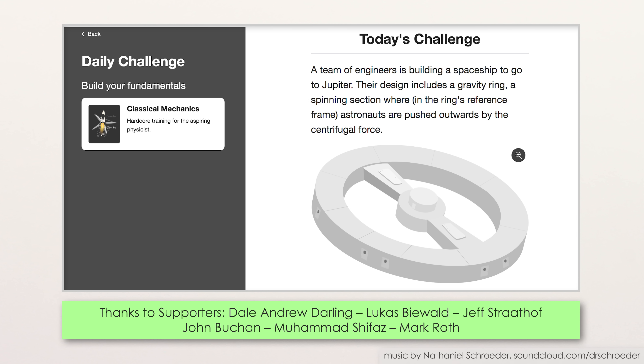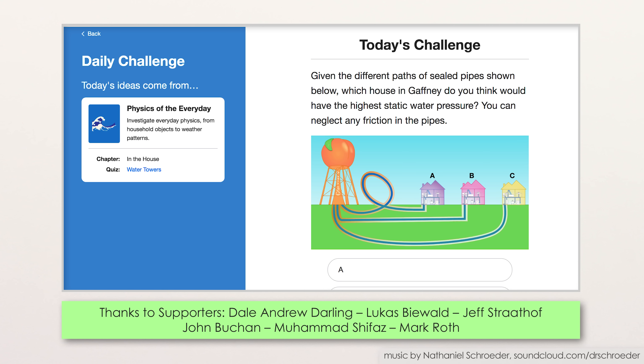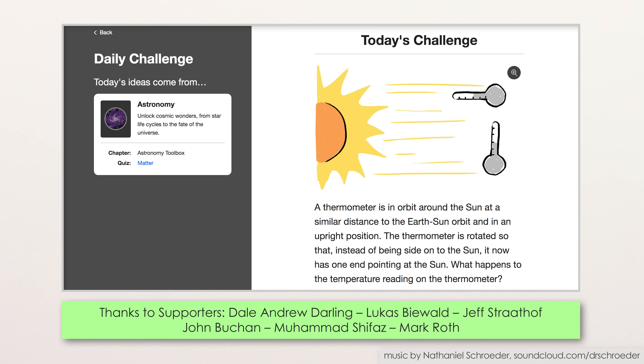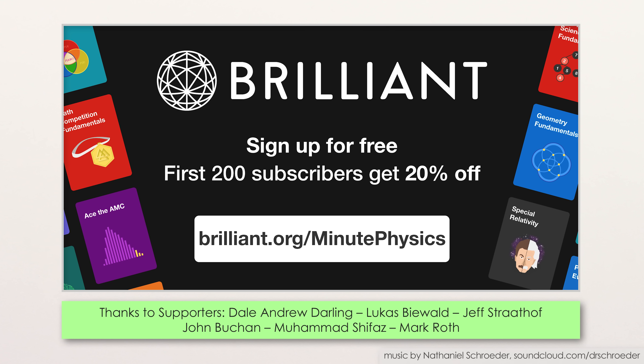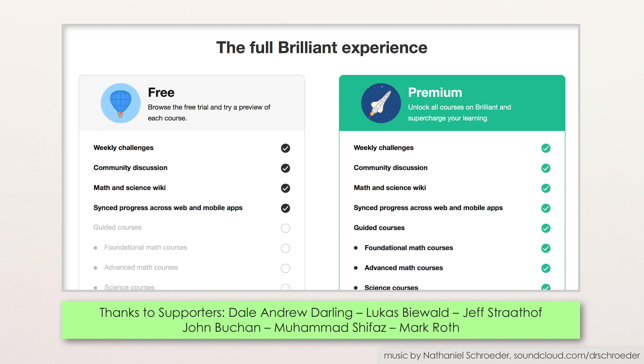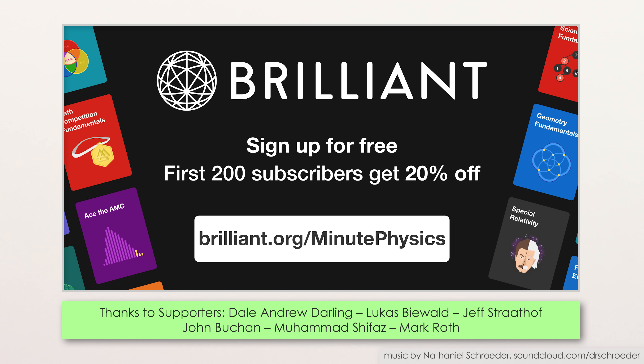Brilliant also has fun, daily challenges, which are bite-sized math and science puzzles, like this one about what happens to a thermometer if you put it in space, and then rotate it. Does it still read the same temperature? Or hotter or colder? Brilliant is offering 20% off a premium subscription to the first 200 Minute Physics viewers to go to Brilliant.org slash MinutePhysics. That lets Brilliant know you came from here, and gets you full access to all of Brilliant's courses, puzzles, and daily challenges. Again, that's Brilliant.org slash MinutePhysics, so that you don't mess up like Einstein.